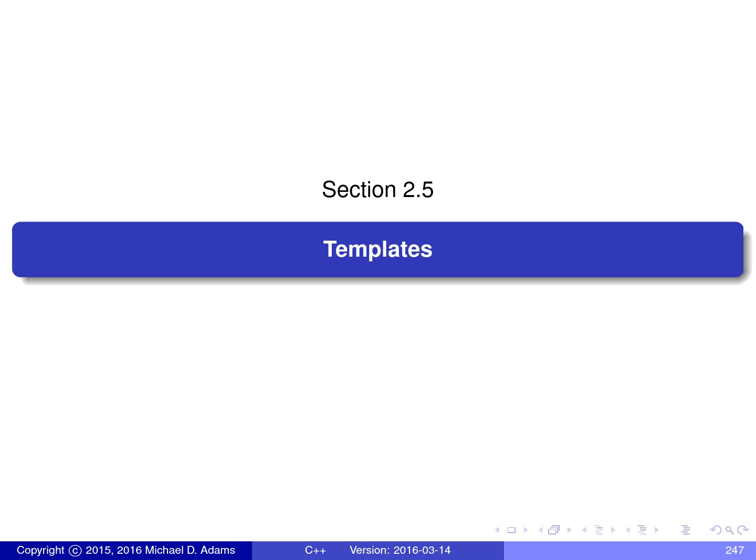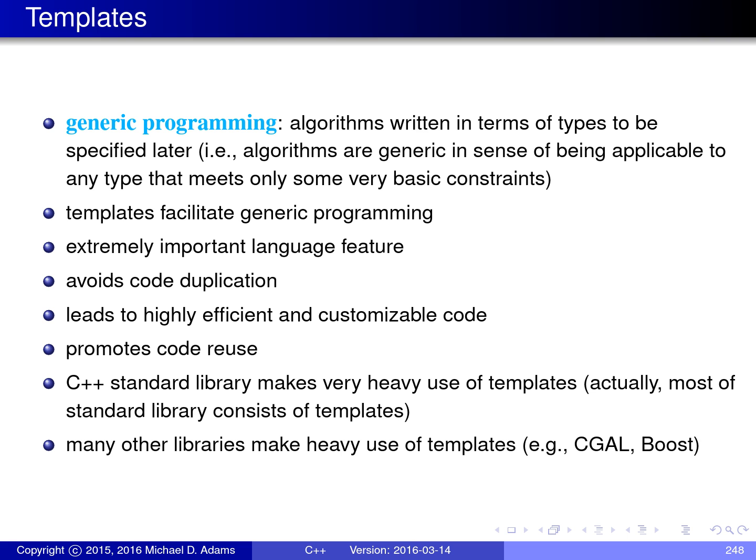In this section, I'll be introducing the language feature known as templates, which supports a style of programming known as generic programming. Generic programming is a style of programming in which algorithms are written in terms of types to be specified later. In other words, algorithms are implemented in a very generic way so that they can be applied to any type that meets certain basic constraints. The particular language feature in C++ that supports generic programming is what's known as templates.